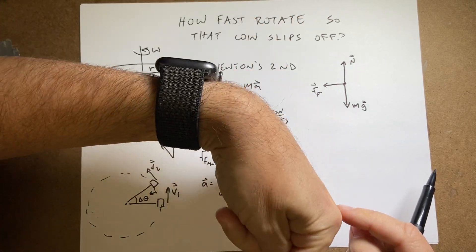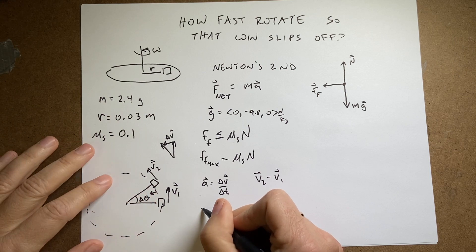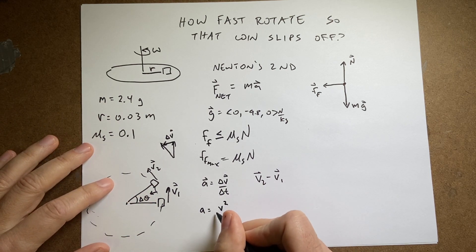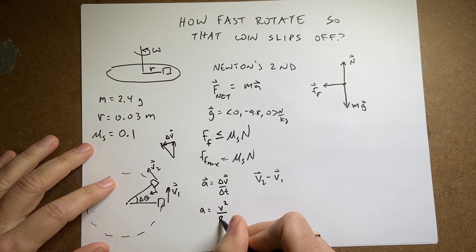And the magnitude of this acceleration is going to be equal to V2, the magnitude of the velocity, divided by the radius R.